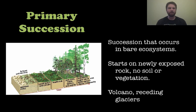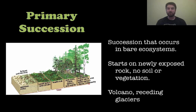You can see in the picture here, we have exposed rocks on the far left, and throughout time we get some small herbs and shrubs, all the way up to some trees at the very end. Starting in a bare ecosystem — that would be primary succession.